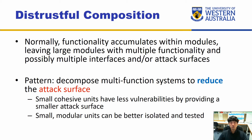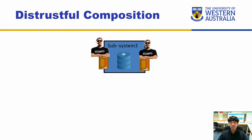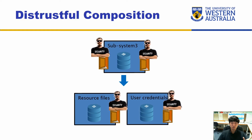In addition, if we have smaller modules operating with others, it's easier to verify whether those modules are functioning correctly. In terms of our system, it kind of looks like this — currently subsystem three contains all of the database items, but now we can separate them into resource files and user credentials.